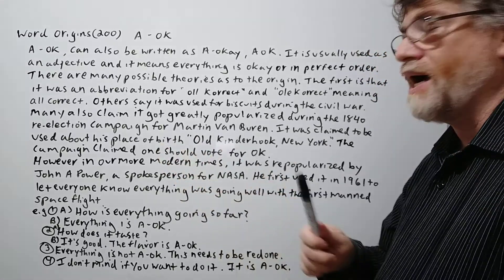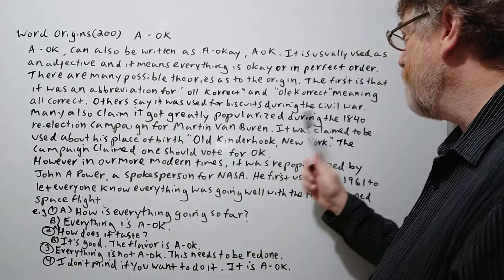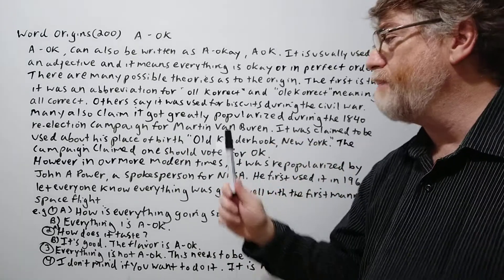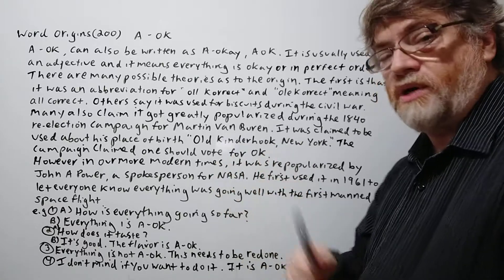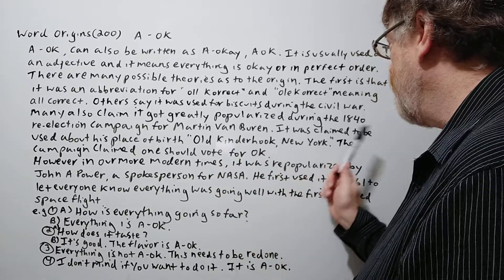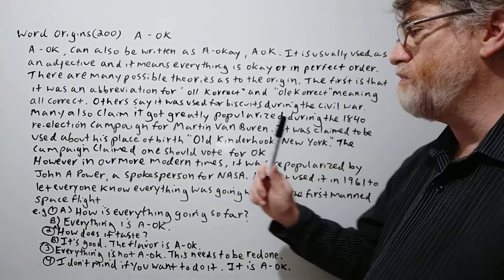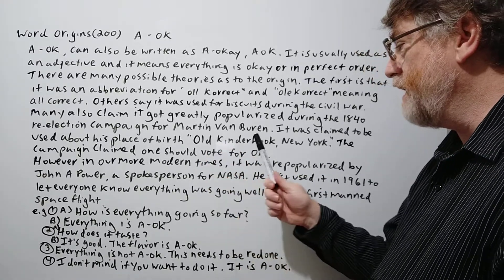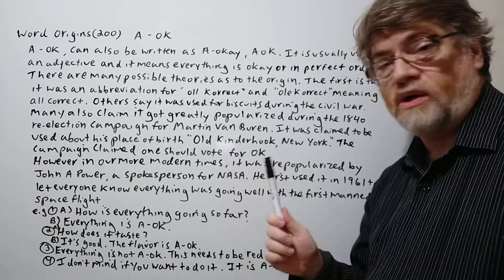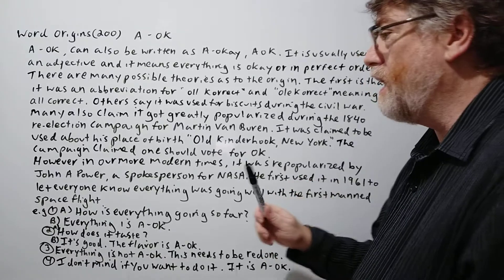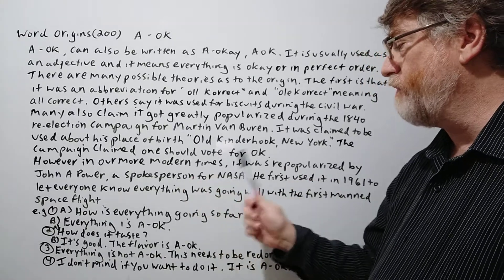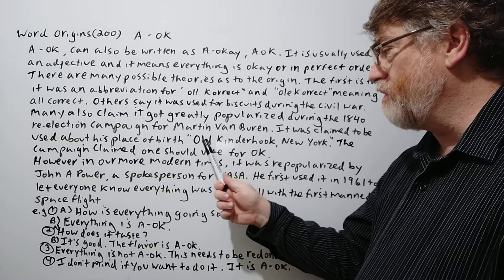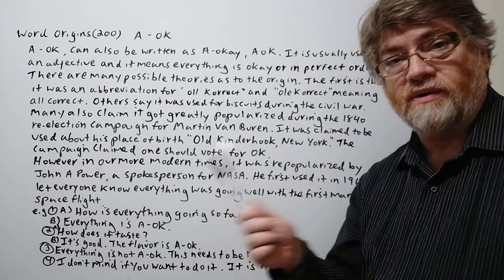Many also claim it got greatly popularized during the 1840 re-election campaign for Martin Van Buren for president. It was claimed to be used about his place of birth, which was Old Kinderhook, New York. The campaign claimed one should vote for OK, meaning Martin Van Buren being from Old Kinderhook.